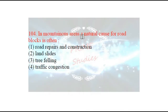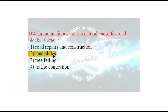Next question: in mountainous areas, a natural cause for road blocks is often what? Jo parvatiya kshetra hoti hai, wahan par jo sadkein hoti hain, woh ruk jaati hain — block hoti hain. The options are: road repairs and construction, landslides, tree falling, or traffic congestion. The right answer is landslide. Landslide kyun hota hai? In mountainous areas where there is heavy rainfall, the rocky portions slide down and block the road.